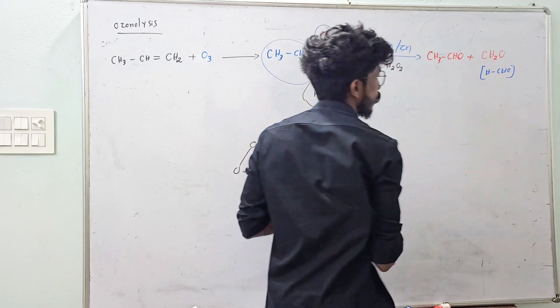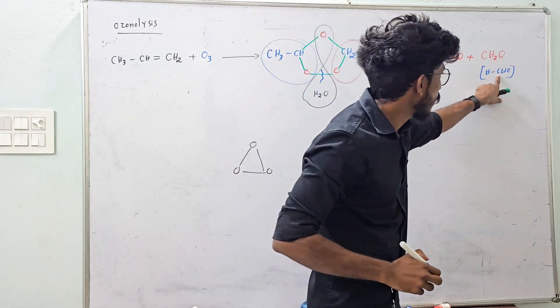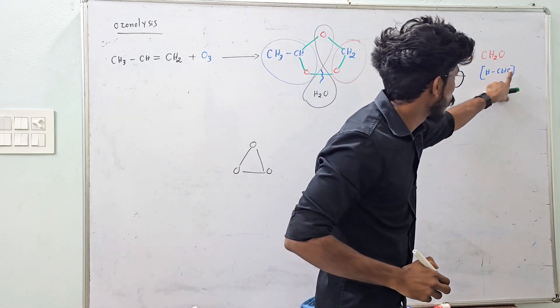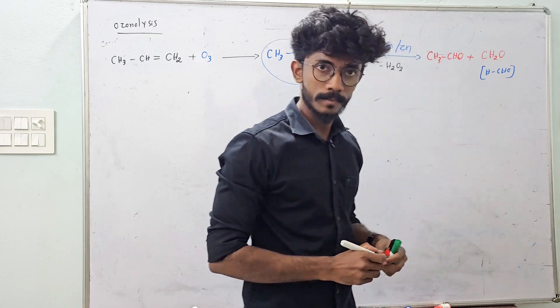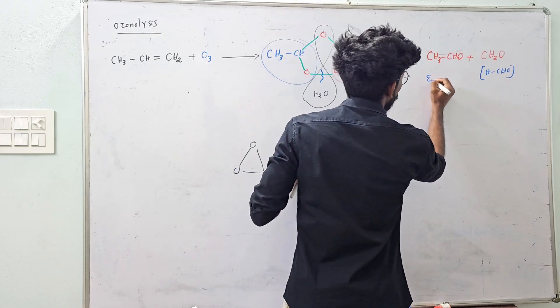The products are CH3CHO plus CH2O. If you learn CH2O, that means CH2O is nothing but HCHO — formaldehyde. You can learn CH2O.